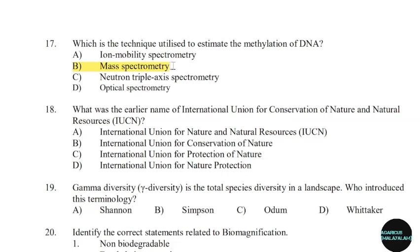18th question: What was the earlier name of the International Union for Conservation of Nature and Natural Resources? Correct answer: Option C — International Union for Protection of Nature.